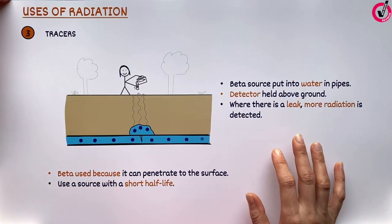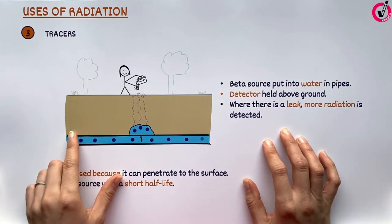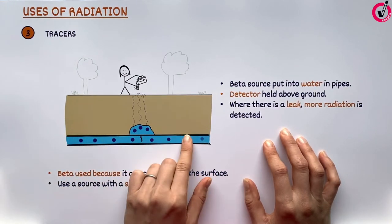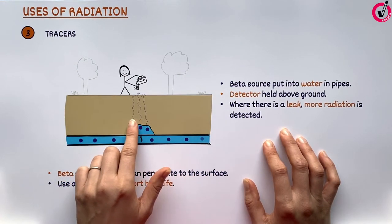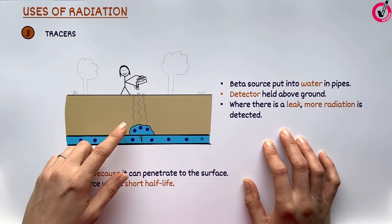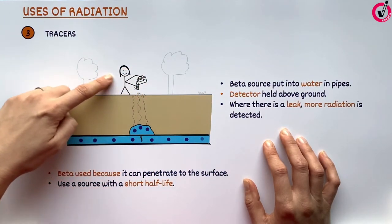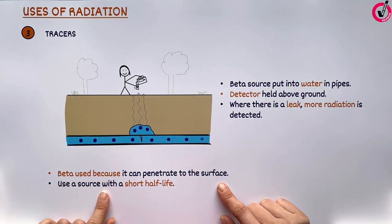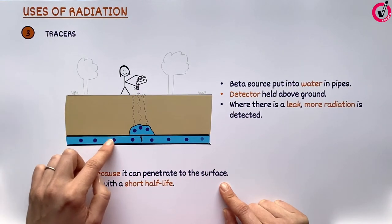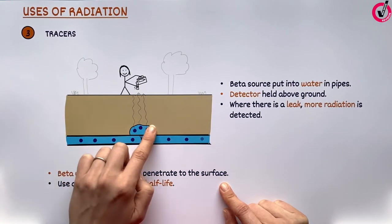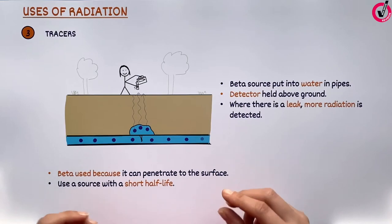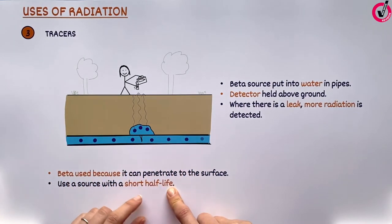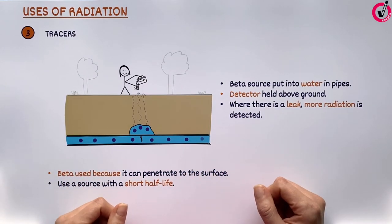Finally, radiation can be used as a tracer. This means it is put inside a liquid that flows — for example, water in pipes underground. If there is a leak, the contaminated water gets into the soil, and then the radiation is detected at the surface and the location of the leak is found. Beta would be used in this case because it would not get through the pipe normally, but it will be detected at the surface if there is a leak. We need a source with a short half-life so that the water does not remain contaminated for a very long time, reducing the risk to people.